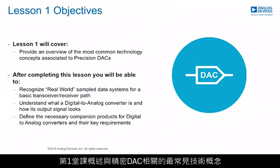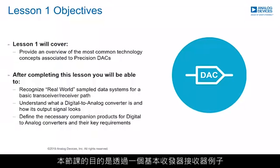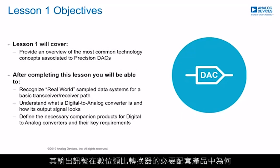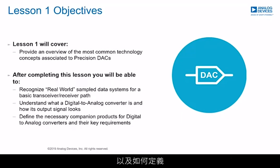Lesson one will provide an overview of the most common technology concepts associated with precision DACs. The objectives are to understand how real-world data systems are sampled using a basic transceiver example, to present what a digital-to-analog converter is and how its output signal looks, and to define the necessary companion products for DACs as well as their key requirements in order to maintain DAC performance.